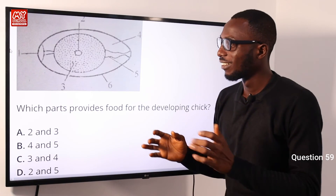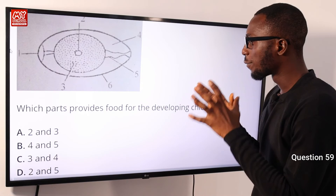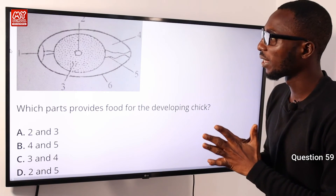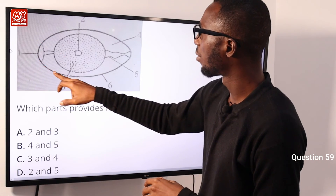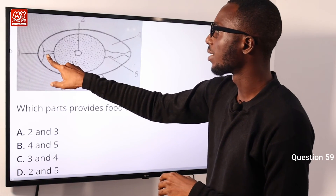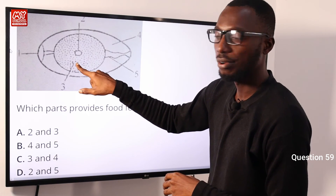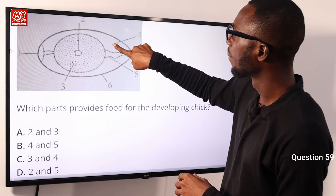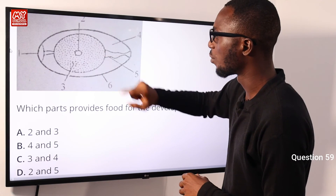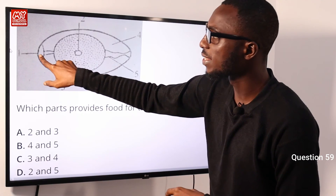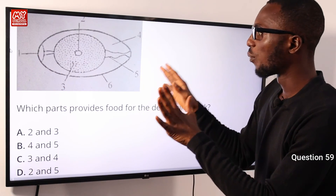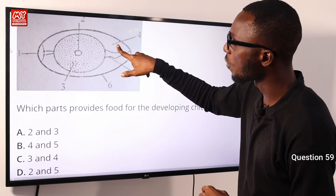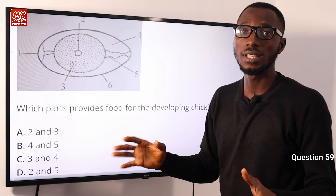Question 59: Which parts provide food for the developing chick? First we identify the parts in the diagram: the shell, the airspace, the chalaza, the yolk, the germinal disc, the albumen — which is the white of the egg — the yolk once again, and the shell. Which of these parts supply food for the developing chick? It is part three, the yolk, and part four, the albumen. So option C is very correct.